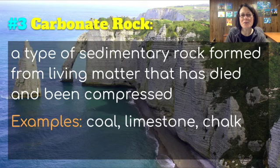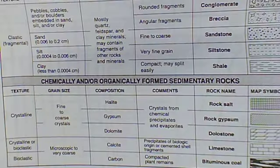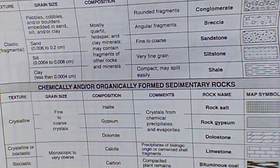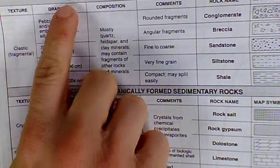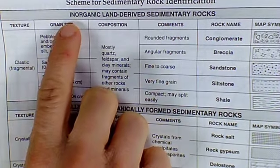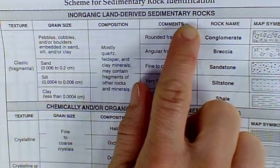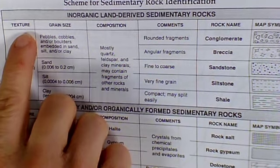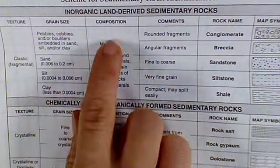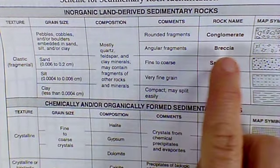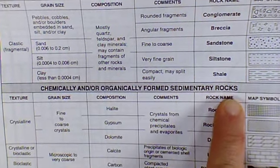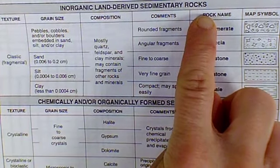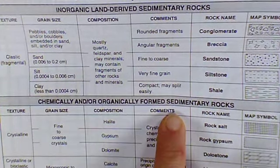Now I'm going to switch over to the reference tables to show you where you can find this information — I'll be on page seven. Here at the top of page seven is the scheme for sedimentary rock identification. At the top is inorganic land-derived sedimentary rocks, with columns for texture, grain size, composition, special comments, rock name, and map symbols. Down below we also have chemically and/or organically formed sedimentary rocks — those are our clastic rocks on top, and our chemical and carbonate rocks below.